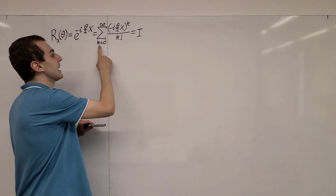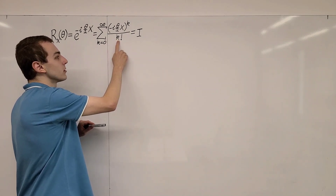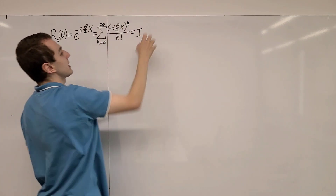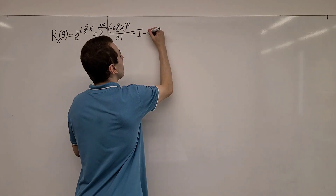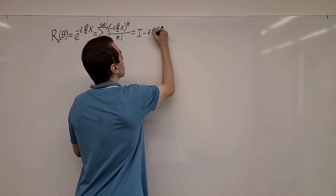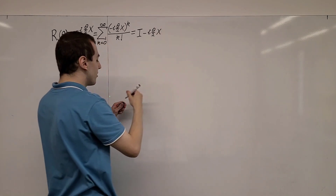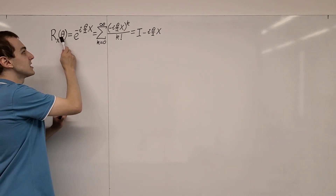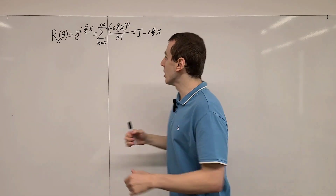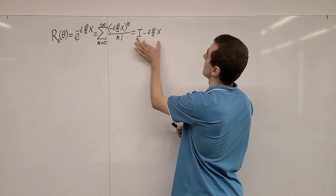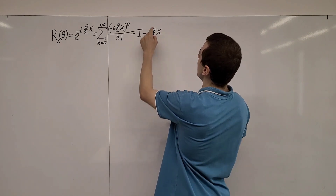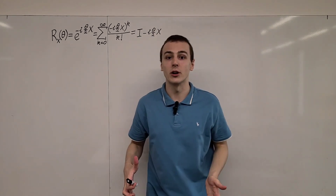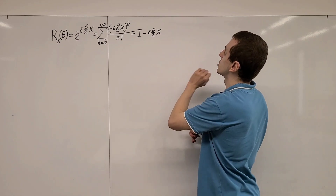The next term is k equals 1. We're going to have 1 factorial, which is 1, and k equal to 1 in the exponent, so we just take what is in the exponent and write that down. That's going to be our next term: minus i theta on 2 times X. At this point we actually have a decent approximation for small angles of theta. If theta is a very small angle, we only need these terms to give a decent approximation. The condition we need to satisfy is that the square of this angle needs to be negligible — theta needs to be really small, and theta squared will be very small.